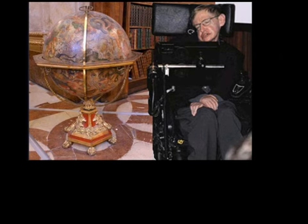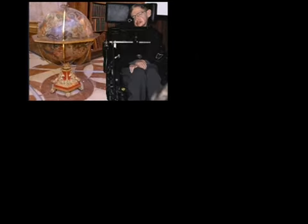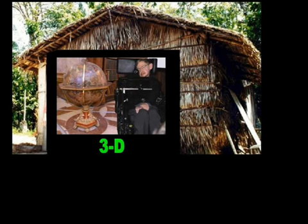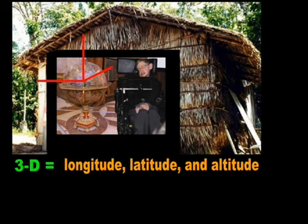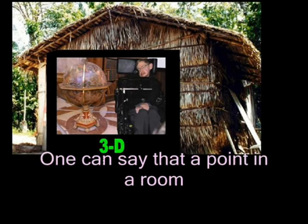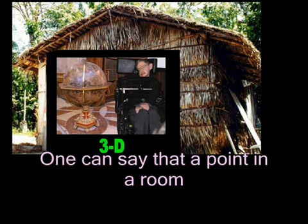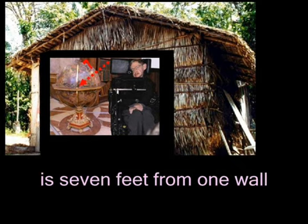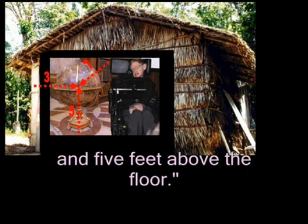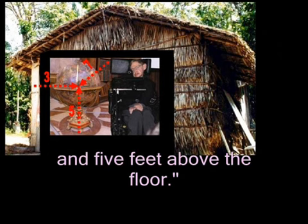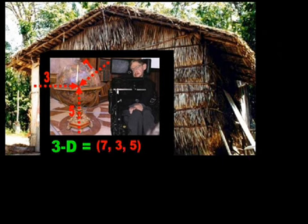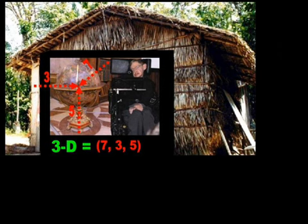Hawking concedes as much when he claims that the living room in which the globe sits is three-dimensional. Again, he justifies this with coordinates: one can say that a point in a room is seven feet from one wall, three feet from another, and five feet above the floor. And if he includes time, Hawking believes that his living room suddenly becomes four-dimensional.